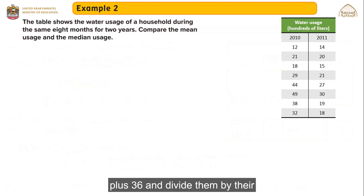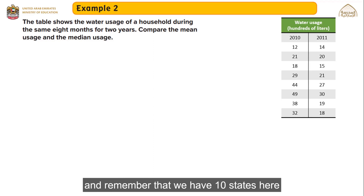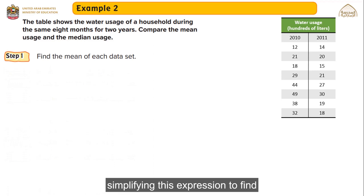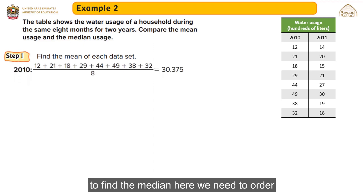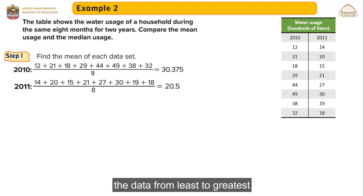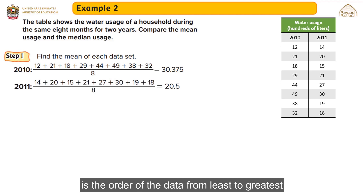Example 2: The table shows the water usage of a household during the same period — eight months for two years. Compare the mean usage and the median usage. The first step is to find the mean of each data set by adding the values and dividing by the number of values. The mean of 2010 is 30.375 and the mean of 2011 is 20.5.